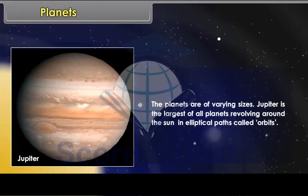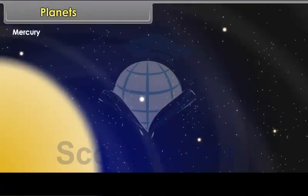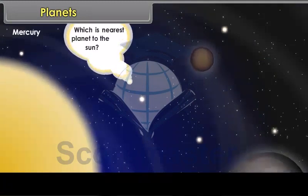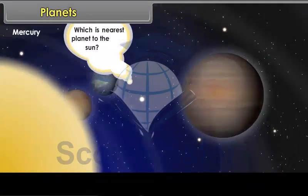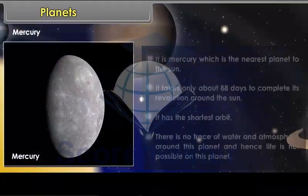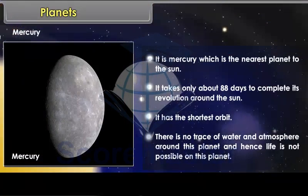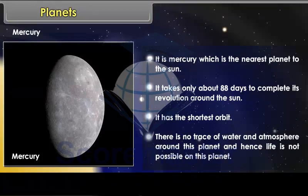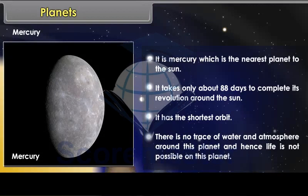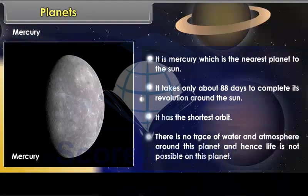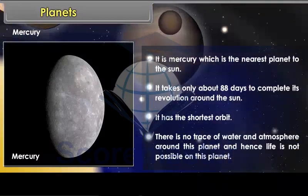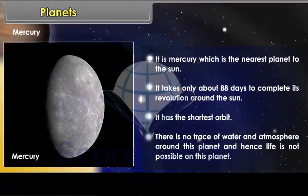Mercury. Which is the nearest planet to the Sun? It is Mercury. It takes only about 88 days to complete its revolution around the Sun. It has the shortest orbit. There is no trace of water and atmosphere around this planet and hence life is not possible on this planet.